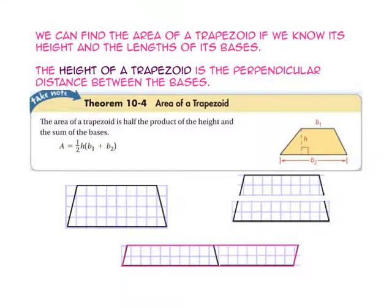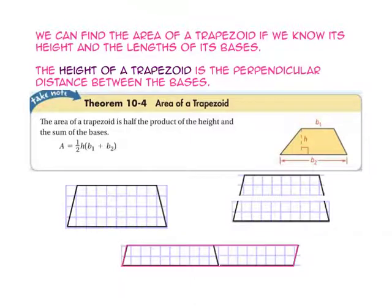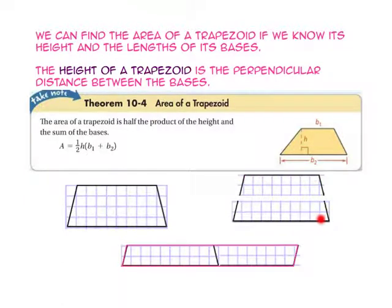We can find the area of a trapezoid if we know its height and the lengths of its bases. The height of a trapezoid is the perpendicular distance between the bases. Theorem 10-4 gives us the formula: the area of a trapezoid is half the product of the height and the sum of the bases. If we cut the trapezoid in half and rotate the top part against the side, we create a parallelogram with bases equal to the top and bottom base combined, and half the height.